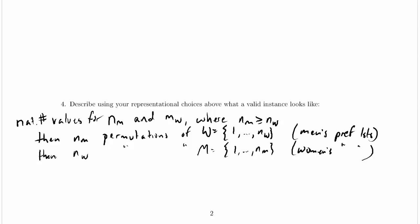An instance has a couple of natural numbers, nm and mw. Let's just assume it takes constant time to read those in. And then we've got nm permutations of w. Reading in those permutations, that's going to take as long as the size of w. Again, if we assume that each element of w takes constant time to read in.